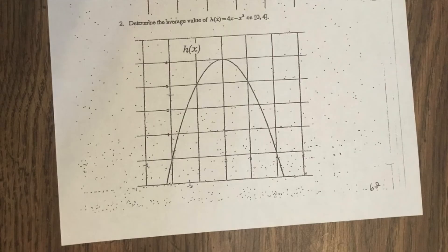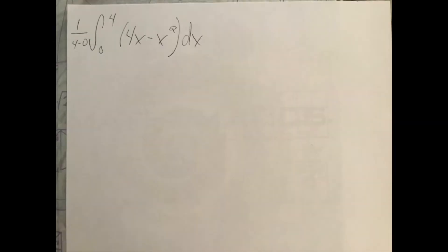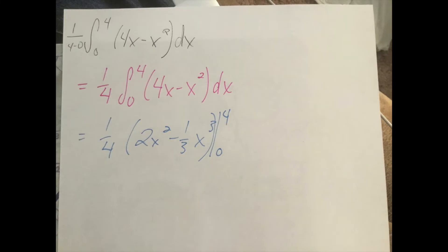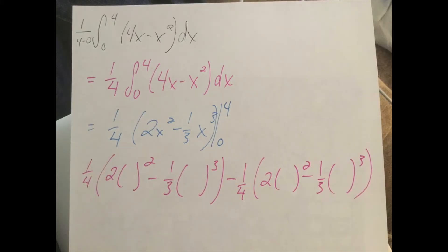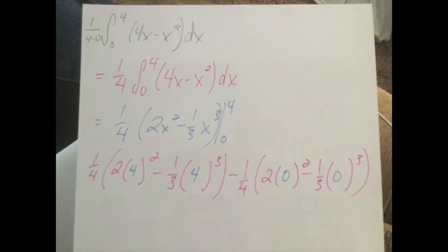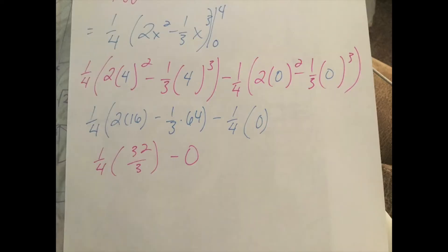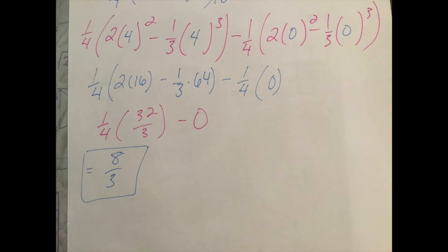This is the problem we just did with the M&Ms. So we're going to find the average value from 0 to 4 on the function 4x minus x squared. So we do 1 over 4 minus 0 times the integral from 0 to 4 of 4x minus x squared. So here we have the actual answer, which is very close to the estimate that we made earlier.